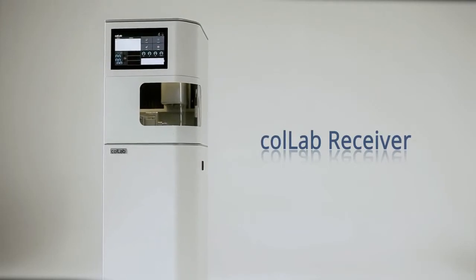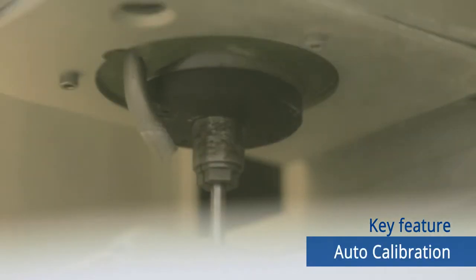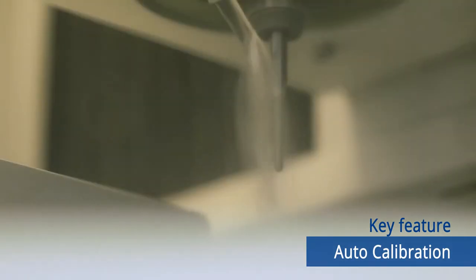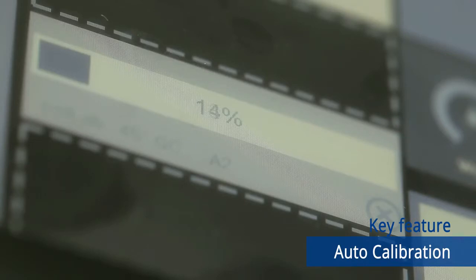CoLab Receiver auto calibration function makes it possible for users to easily calibrate the CoLab Receiver on their own. In this way, any distortions that may have been found from axes are automatically calibrated ensuring high quality final restorations.